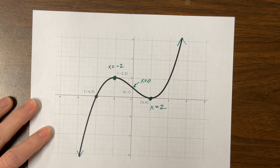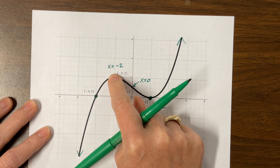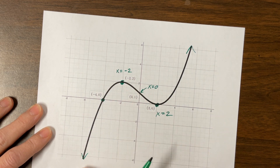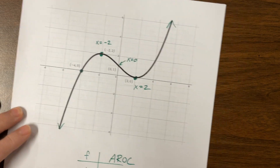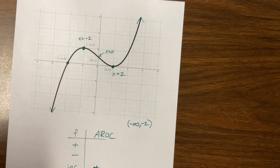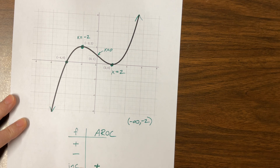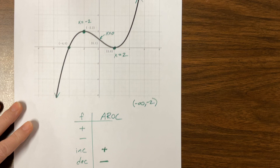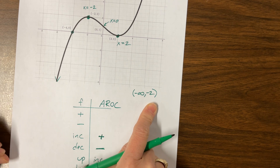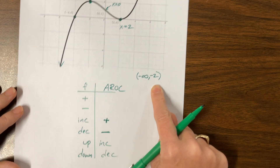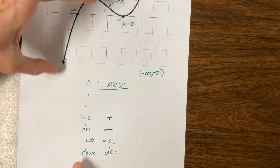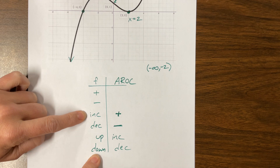When we look at this graph, from negative infinity to negative 2, the graph is increasing and it's concave down. The graph is concave down from negative infinity to zero, where the inflection point is. So on the interval from negative infinity to negative 2, the function is increasing, which means the average rate of change is positive. The graph is concave down on this piece, which means the average rate of change is decreasing. So the average rate of change on this interval is positive and decreasing, while the graph itself is increasing and concave down.